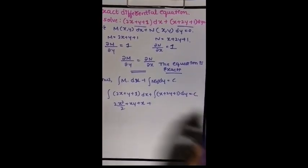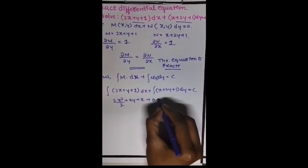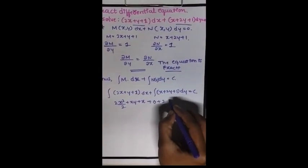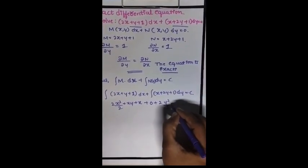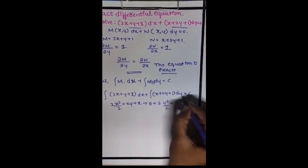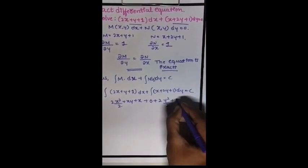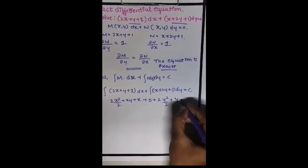So x becomes 0, plus 2 into the integration is y square divided by 2, plus 1 integration with respect to y is y equal to c.